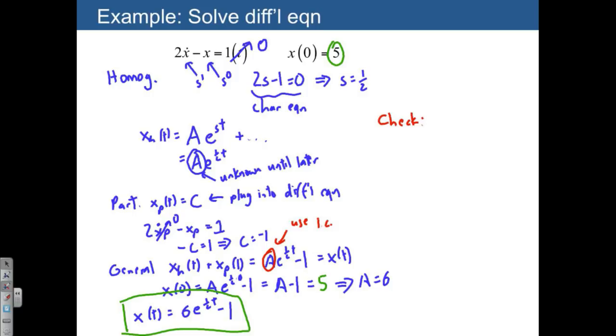6 e to the 1 half t minus 1. We can actually plug back in 2 times x dot minus x. So here's the 2, 2 times the derivative of 6 e to the 1 half t we're going to need. So that's going to be 3 e to the 1 half t. The 1 has a derivative of 0, so that's all we end up with for x dot.